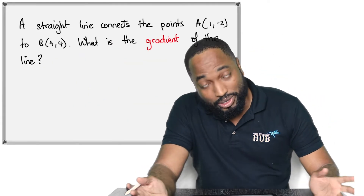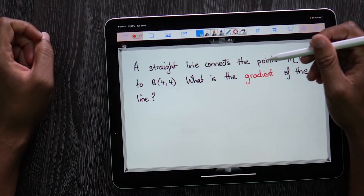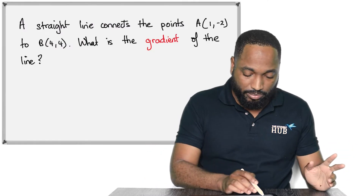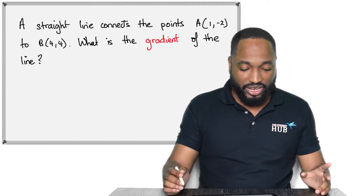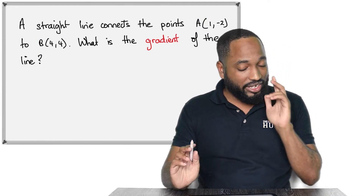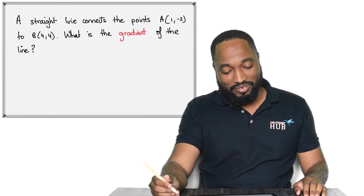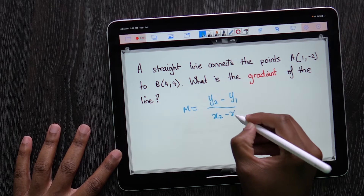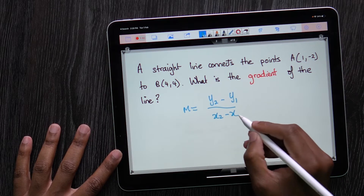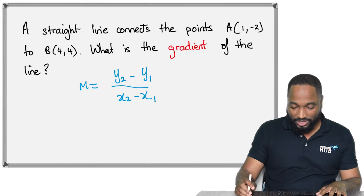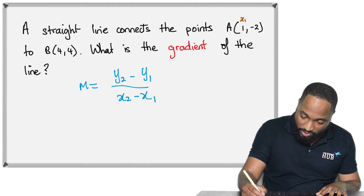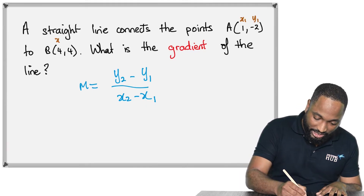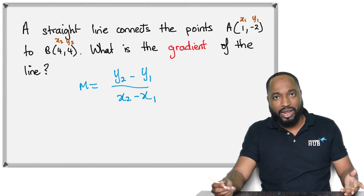M is the codename for the gradient in this coordinate geometry. A straight line connects point A to point B and they gave us the coordinates of these points. What is the gradient of the line? In this case you're going to use the formula. The formula for gradient looks like this: m = (y2 - y1) / (x2 - x1). What I do is designate who is x1, y1, x2, y2, and then you just apply the formula.